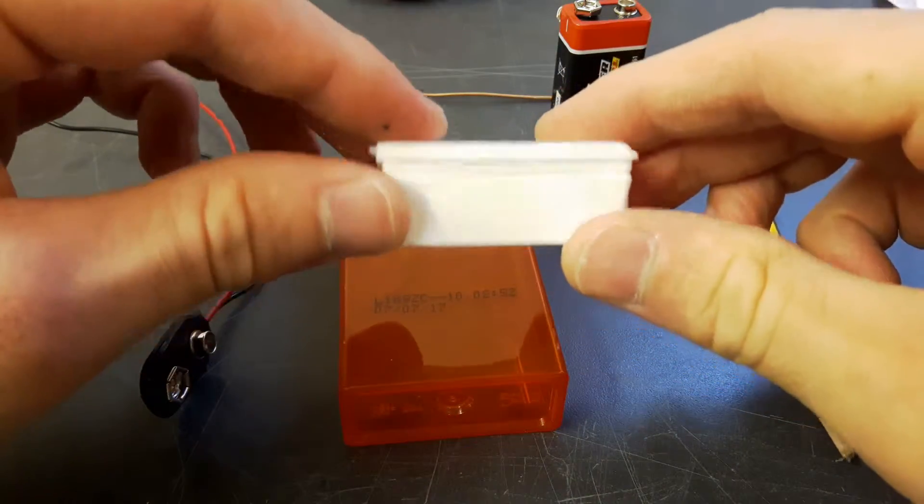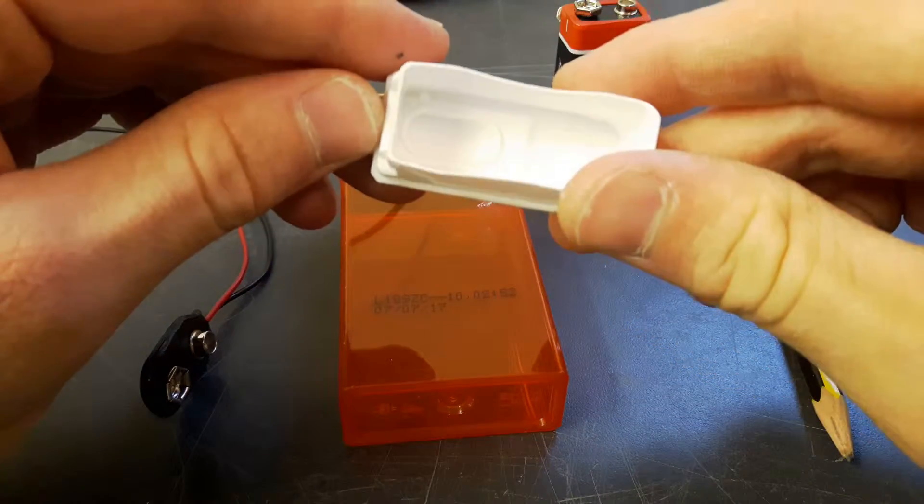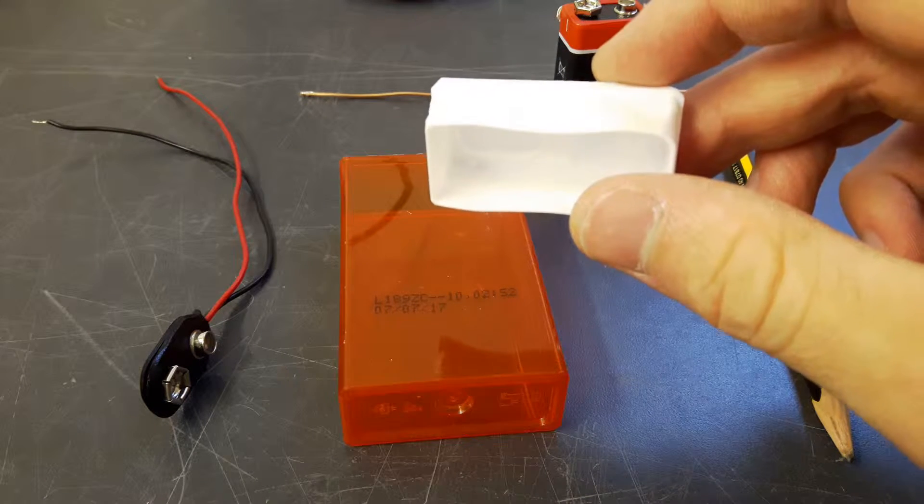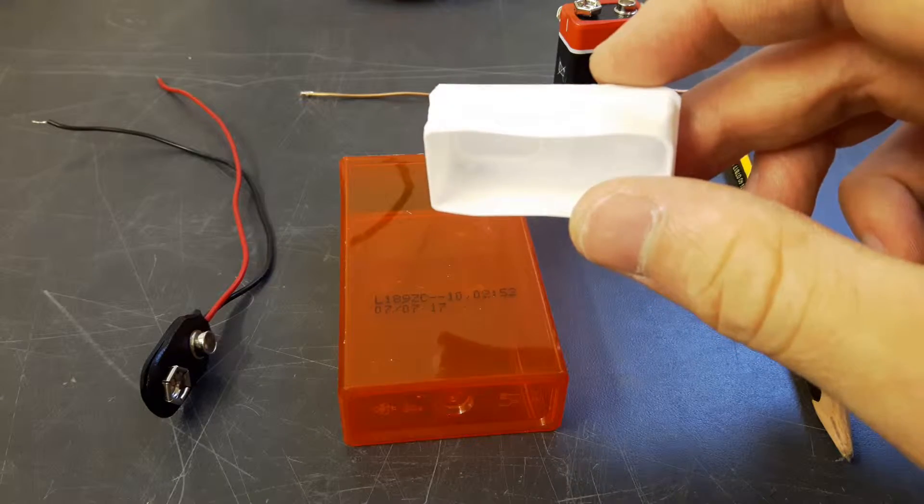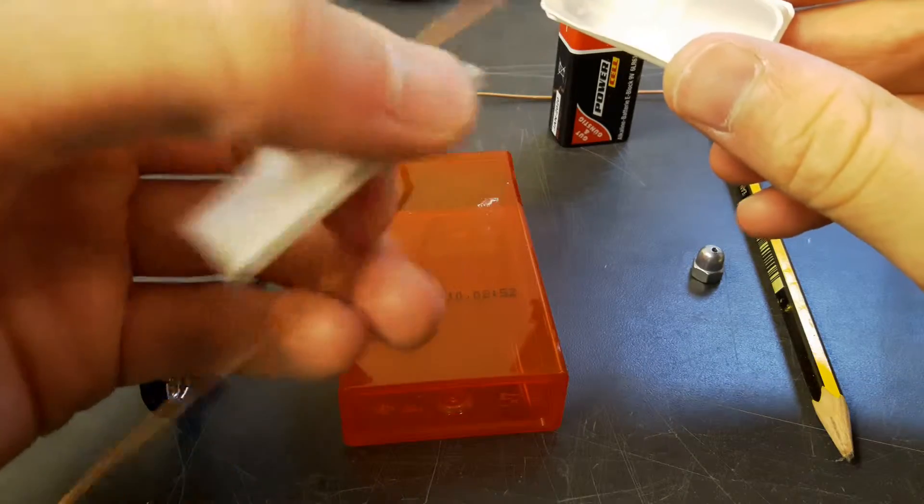And now we have to drill two holes for both wires into the white cap. So the whole thing will actually be an electrolysis box that generates hydrogen from an electrolyte in water, and these are the electrodes.